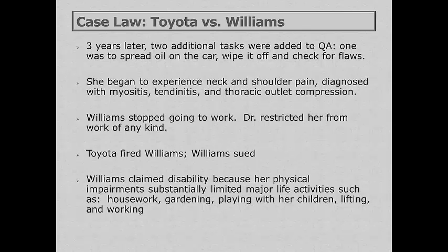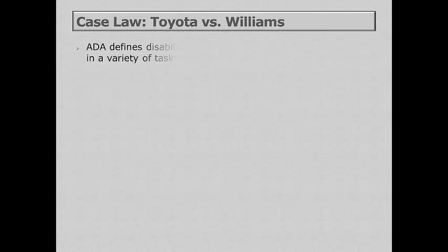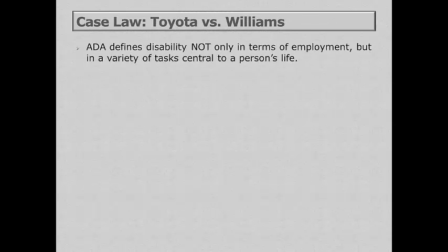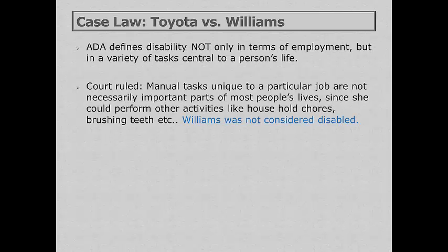Williams claimed a disability because her physical impairment substantially limited major life activities such as housework, gardening, playing with her children, lifting, and working. The ADA defines disability not only in terms of employment but also in a variety of tasks central to a person's life. However, the courts ruled that manual tasks unique to a particular job are not necessarily important parts of a person's life. Since she could perform other activities such as household chores and brushing her teeth, Williams was not considered disabled.